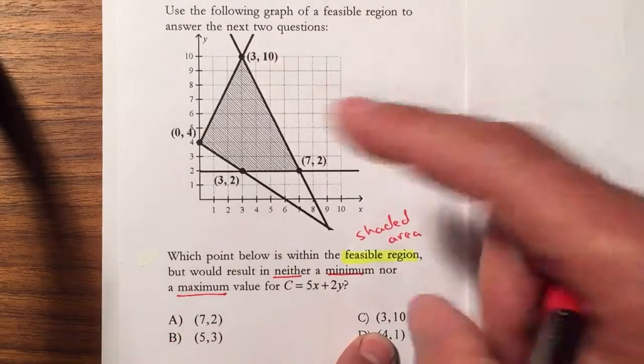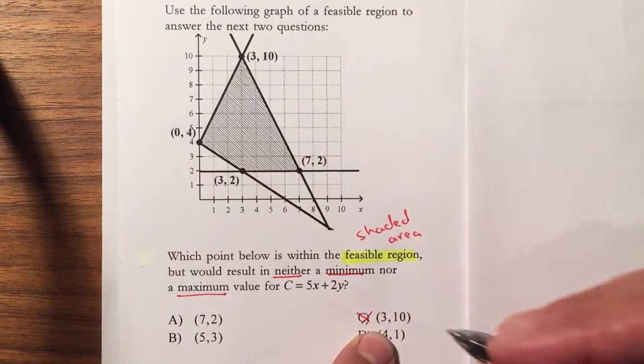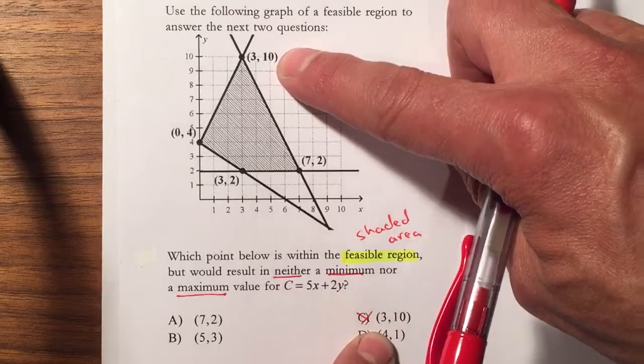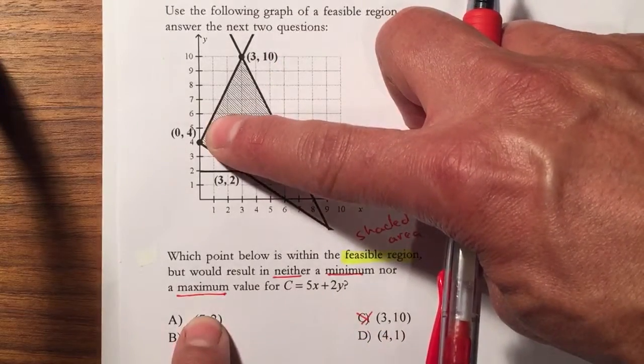We don't want it to be (3,10), so C cannot be an answer because that can be a minimum or maximum. We don't want it to be (0,4) - it's not here.